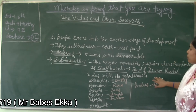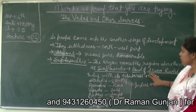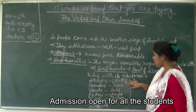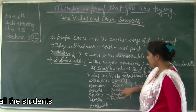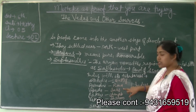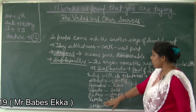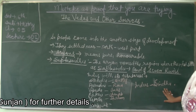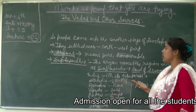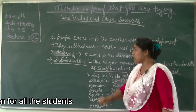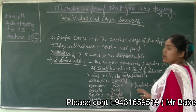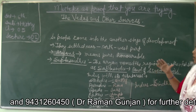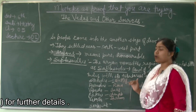The tributaries that flowed in the Sapt Sindhu region were: Satudri (today's Sutlej), Parushni (Ravi River), Vipasha (Beas River), Askini (Chenab), Vitasta (Jhelum), the Saraswati River, and the Indus (Sindhu) River. All these rivers flowed in the northwest region. It is still not very clear where exactly the Aryans came from — some scholars say they came from European countries, others say from Central Asia.